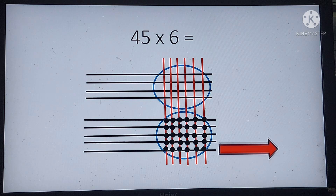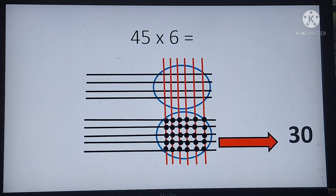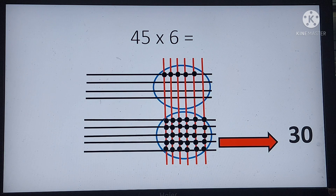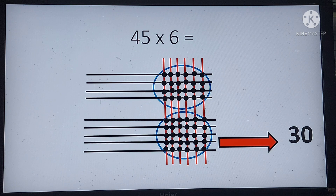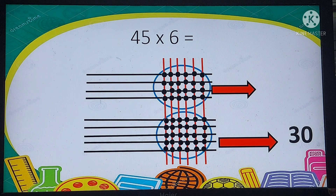Now let us go to the upper circle and count the points where the red and the black lines meet. Counting: 1, 2, 3 ... up to 24. So we have 24 points of intersection in the upper circle.